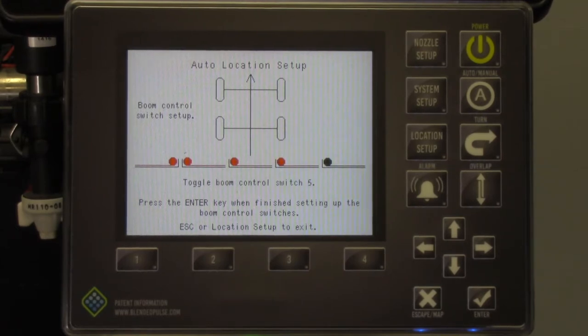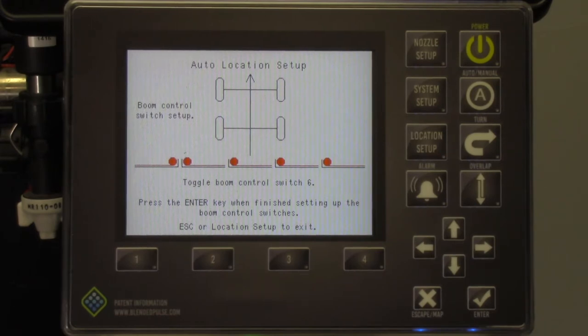Be sure to go slow here. If you move too fast, you could assign multiple VCMs to one section and this would cause the system to work incorrectly. As the VCMs light up, you will also see a number change at the bottom of the screen. Wait for that number to change before moving to the next section.